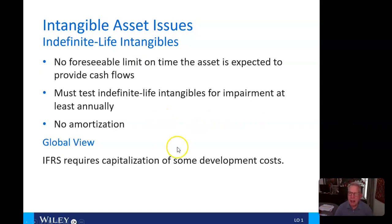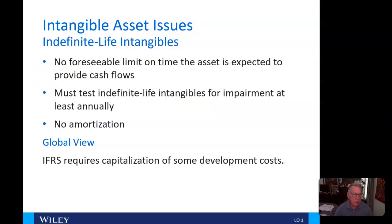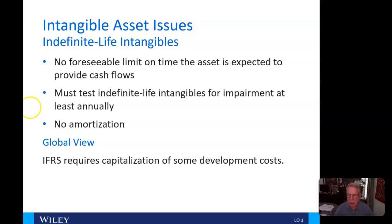Now, indefinite life intangibles. There's no foreseeable limit on the time the asset is expected to provide cash flows. In the case of the Nike swoosh, that would be an example of a trademark. Companies must test indefinite life intangibles for impairment at least annually, and there is no amortization.